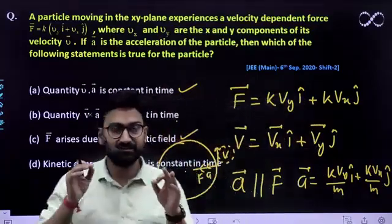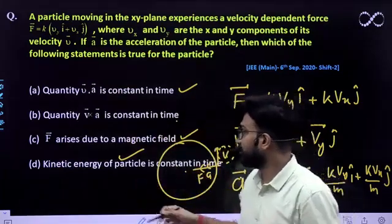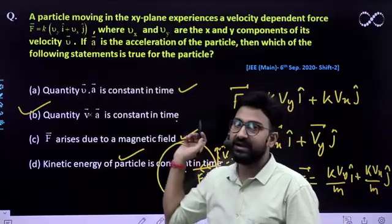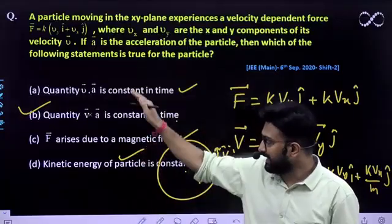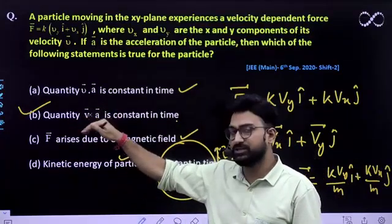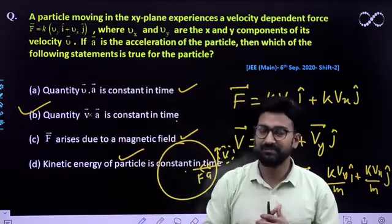So only for JEE Mains type questions, you have to visualize like this. So that means only one option remains. That is quantity v cross a is constant in time. So eliminating others you can easily find this, that this is the possible situation or this is the possible answer that you can get. I hope this is clear. Thank you.